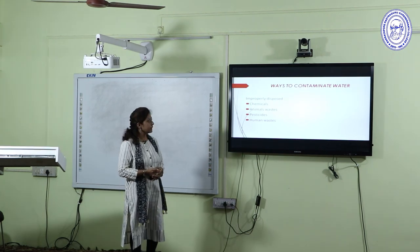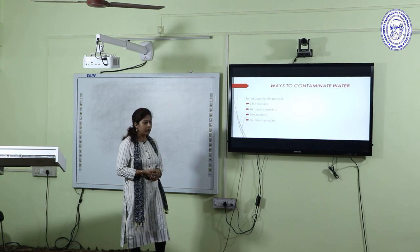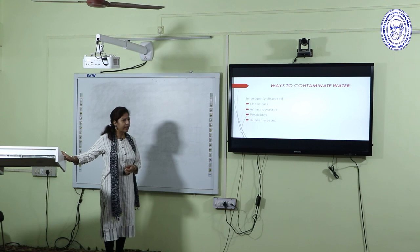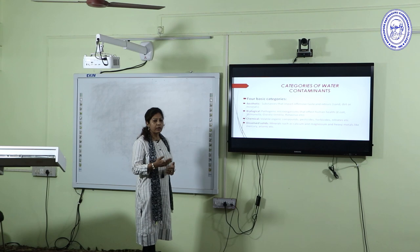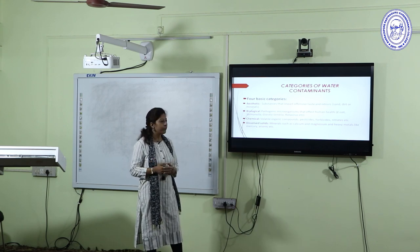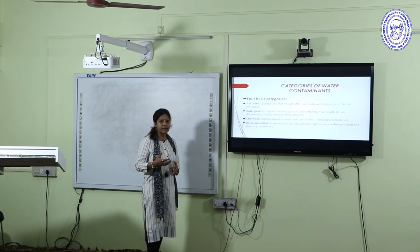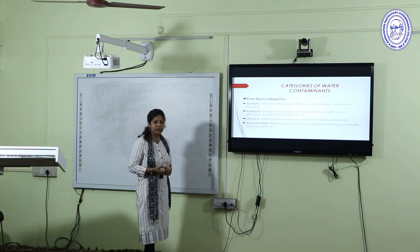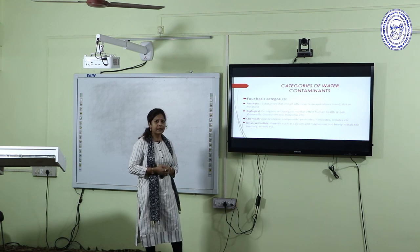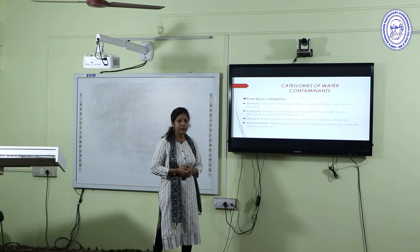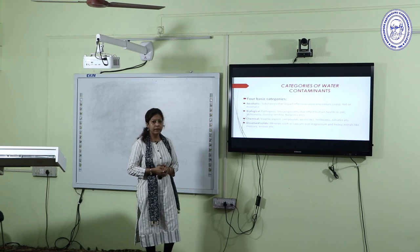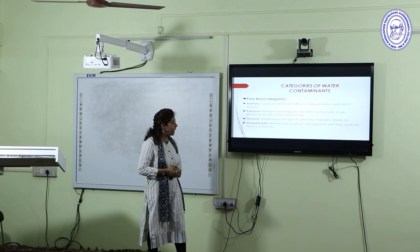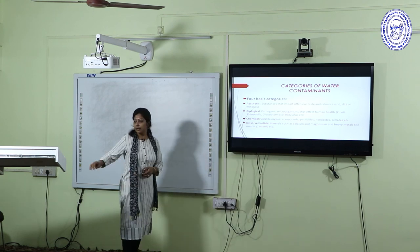How does water get contaminated? There are various ways, such as improperly disposed chemicals, animal waste, pesticides, human waste, and agriculture waste added to water. Contaminants are categorized into four types: aesthetic contaminants, which impart taste, odor, or smell to water such as sand, dirt, or minerals; biological contaminants, which are pathogenic microorganisms causing gastrointestinal diseases; chemical contaminants such as volatile organic compounds, pesticides, and herbicides; and dissolved solids, which are minerals like calcium, magnesium, and heavy metals such as arsenic and mercury.